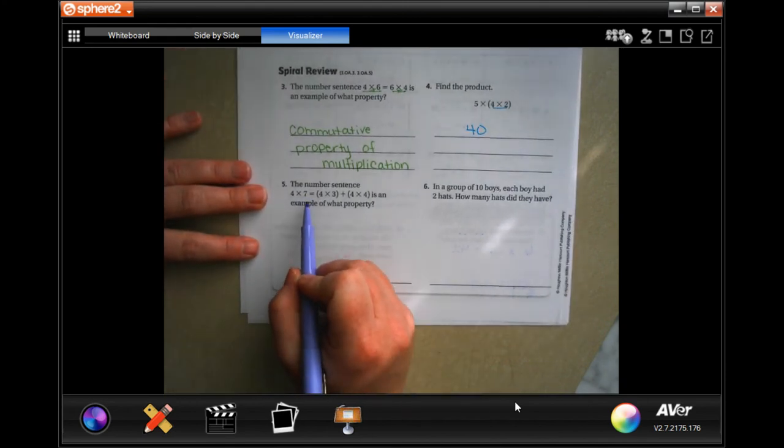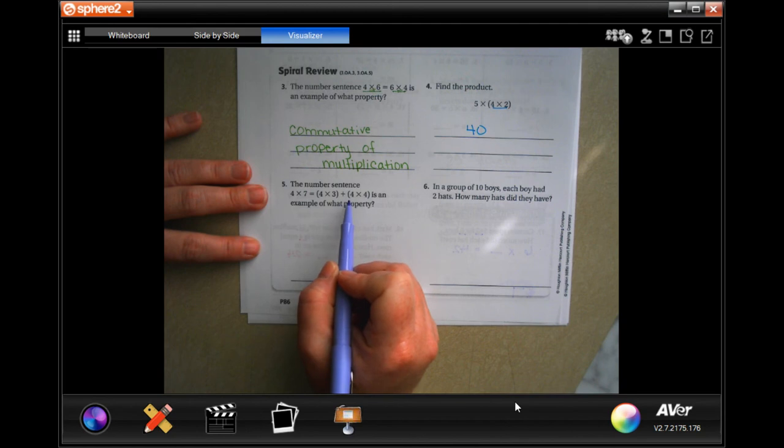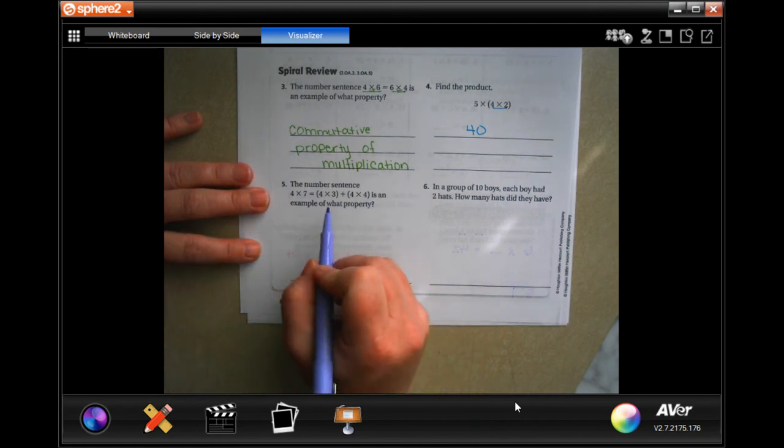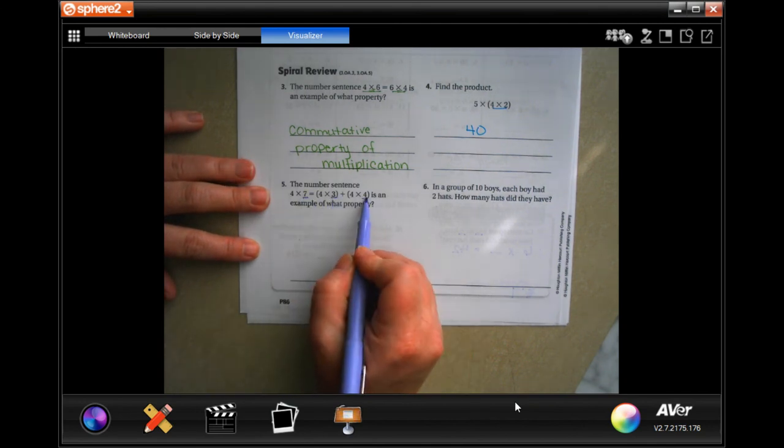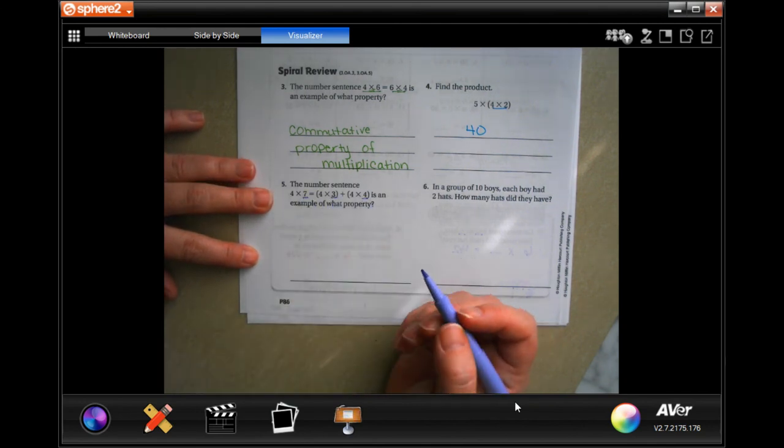The number sentence four times seven equals four times three plus four times four is an example of what property? Well, all they did was break up the seven into three and four. So, when they break it up,